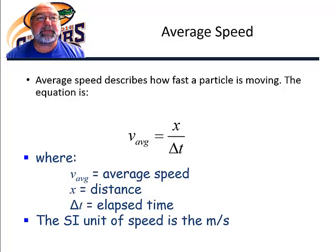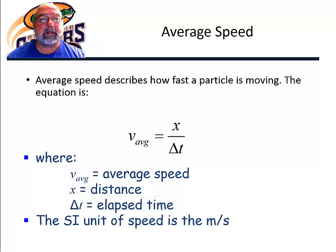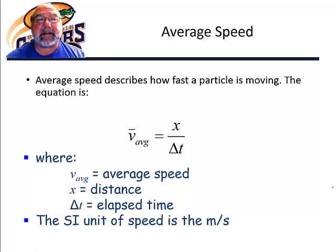We're starting with average speed. This describes how fast a particle is moving, and the equation is the distance divided by the time interval. We symbolize it with a lowercase v and a subscript of average, or sometimes we put a bar over the v, and that's a mathematical symbol for average. Sometimes we do that, and then we wouldn't write average in that case.